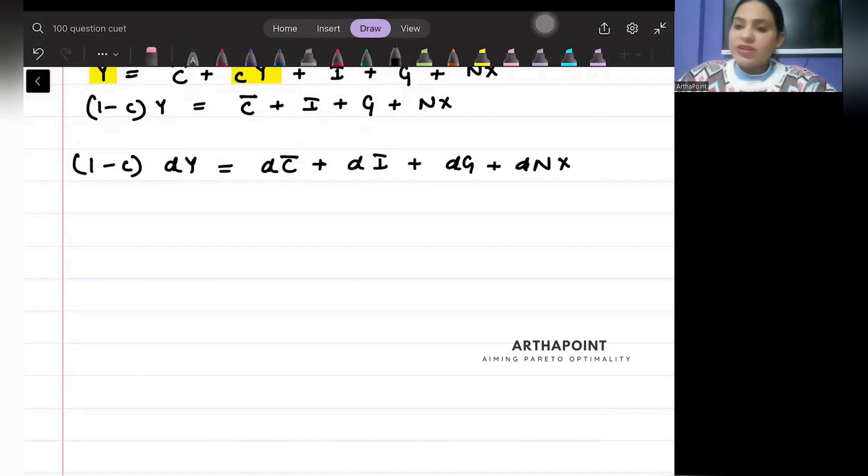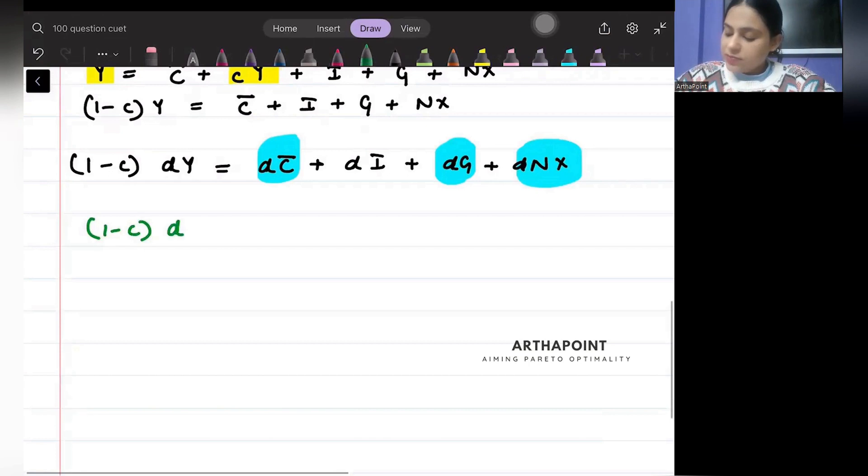Now I have to find investment multiplier. So all other changes will be 0. So I will put 0 everywhere and I will get (1 - c)dY = dI.